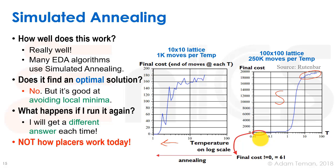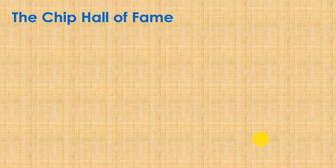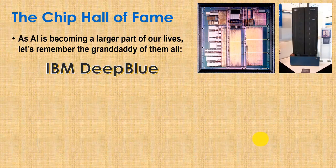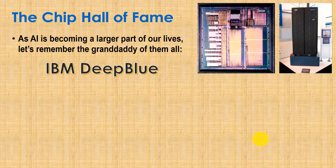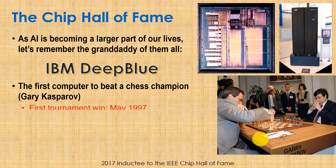But I just want to mention: this is not how placers work today, and we'll do that in a moment after we go into today's Chip Hall of Fame. So the chip we're going to be discussing today is Deep Blue. This is something that's really relevant for today, because artificial intelligence is becoming a larger part of our lives, and one of the things that started this was Deep Blue.